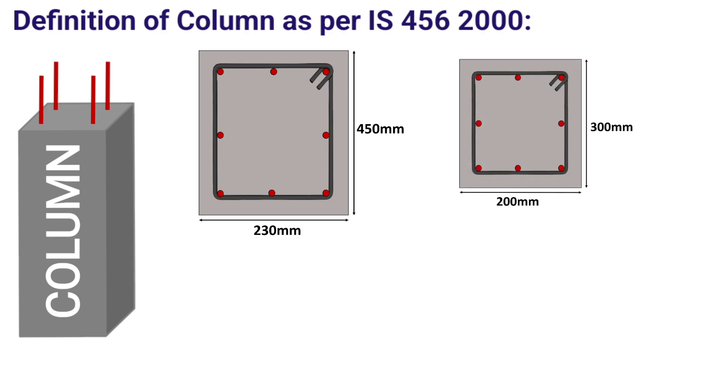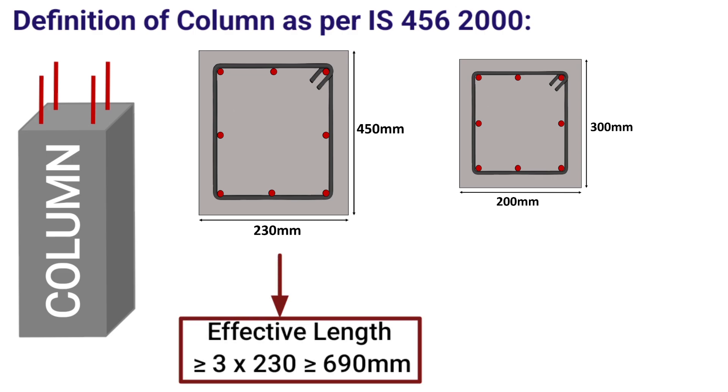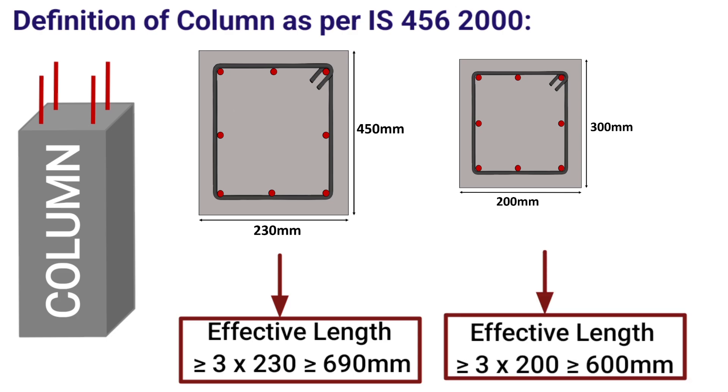Similarly, for a column of size 200 x 300 mm, the least lateral dimension would be 200 mm. As per the definition of a column, the minimum effective length of a 230 x 450 mm column should be 3 times 230, i.e. 690 mm, and for the column of size 200 x 300 mm, the effective length shall be at least 3 times 200, i.e. 600 mm.